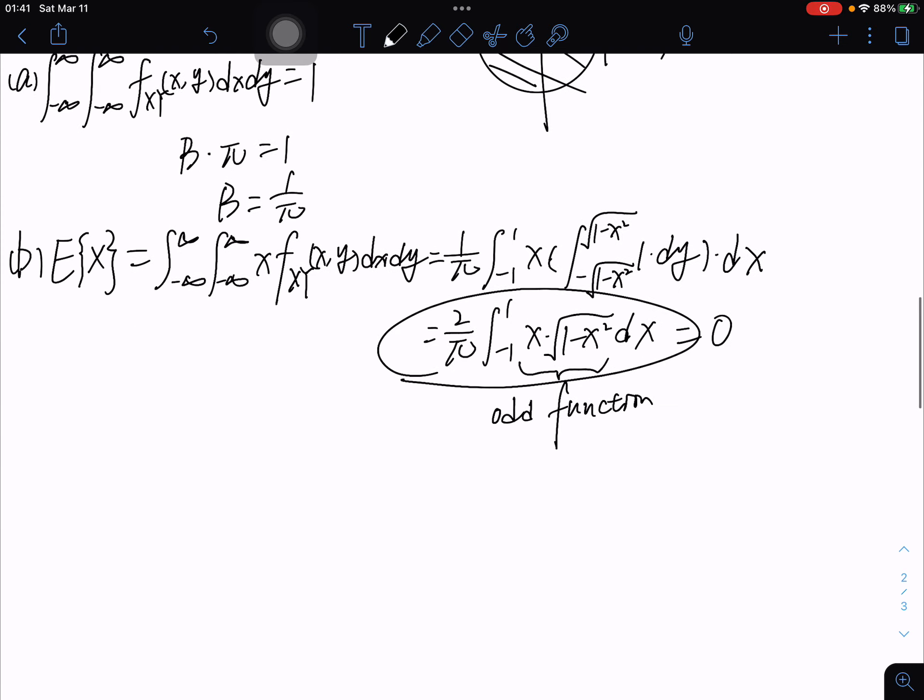Right, since E[X] is zero, so E[X|Y] is definitely zero. And E[X] conditioned on capital Y is zero too.